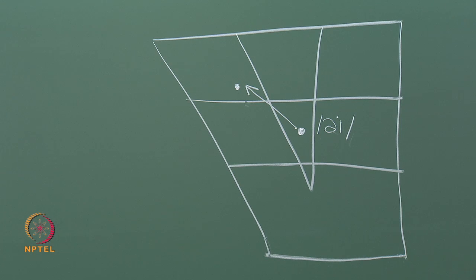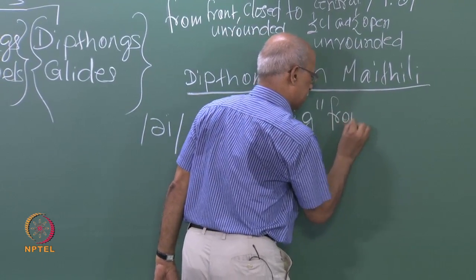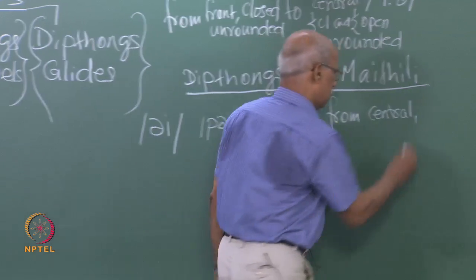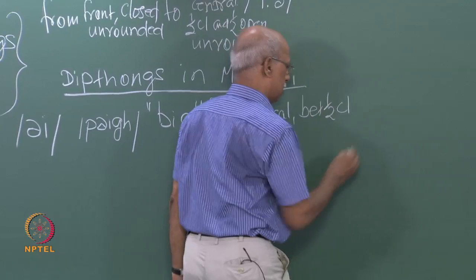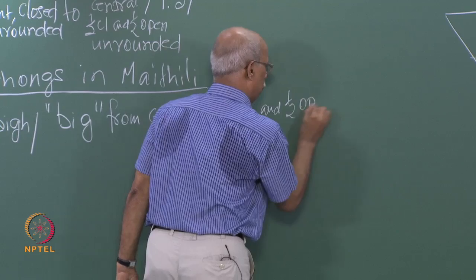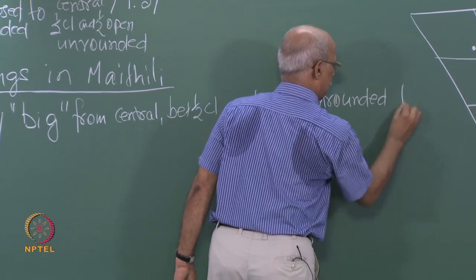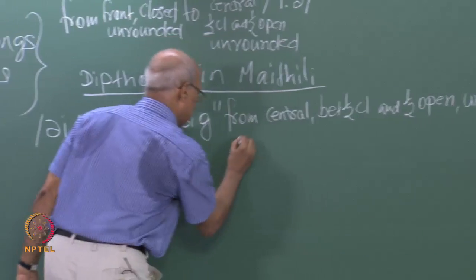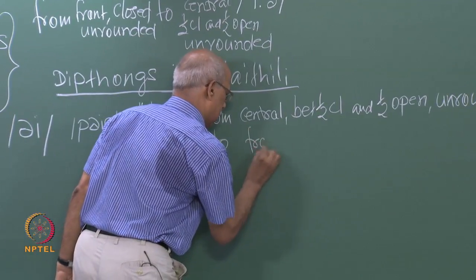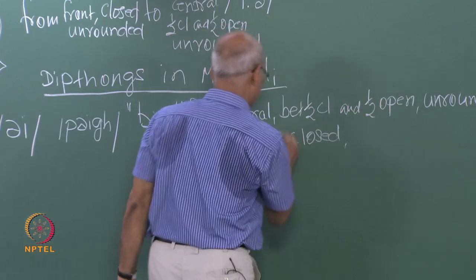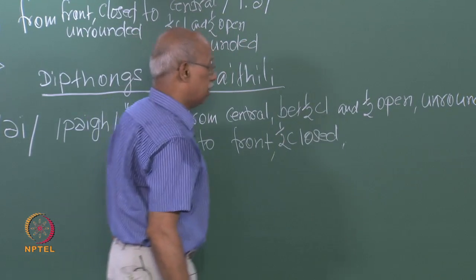Can you help me write the description? I want to say: from — front or back? Central. From central — close or open? Between half-closed and half-open. Rounded or unrounded? Unrounded. Lovely. To — front or back? Front. Close or open? Half-closed. Rounded or unrounded? Unrounded. Great.